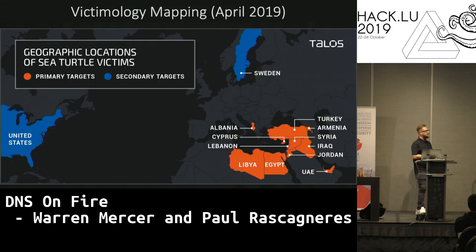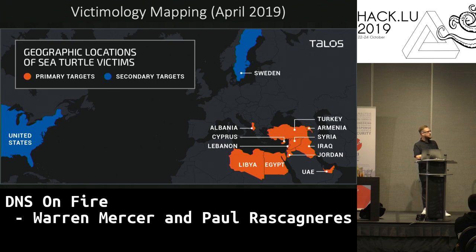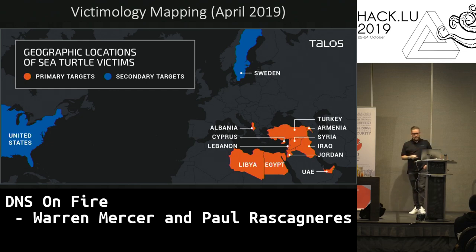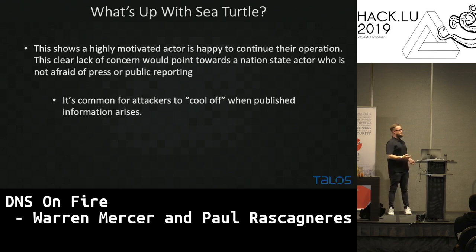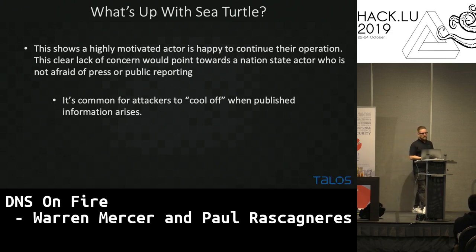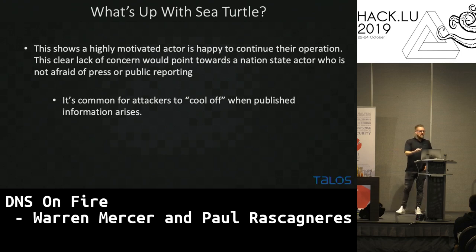The victimology when we first released this: we had some secondary and primary targets, most of them around the Middle East and North Africa region, with a couple falling into Europe — Cyprus and Albania. This is how victimology looked around April 2019 when we published this. Generally when you publish a report aimed at nation-state actors they slow down. These guys just went 'let's do more!' and went off and did more. They had no concern at all that we published all their information, all their IOCs, all their methodologies. We equipped both Cisco customers and the people of the world with the ability to detect these guys. This was very heavily reported in the press — they didn't care.